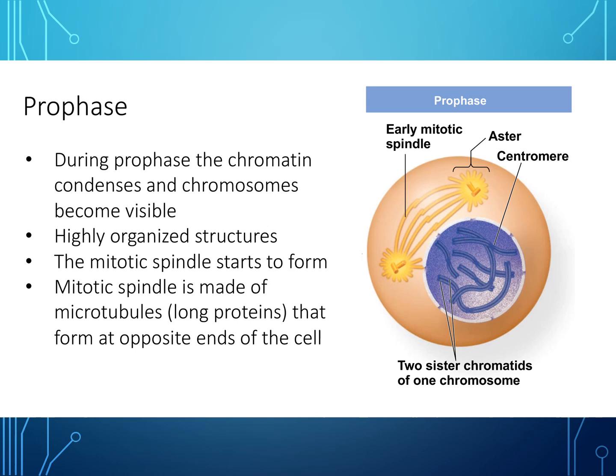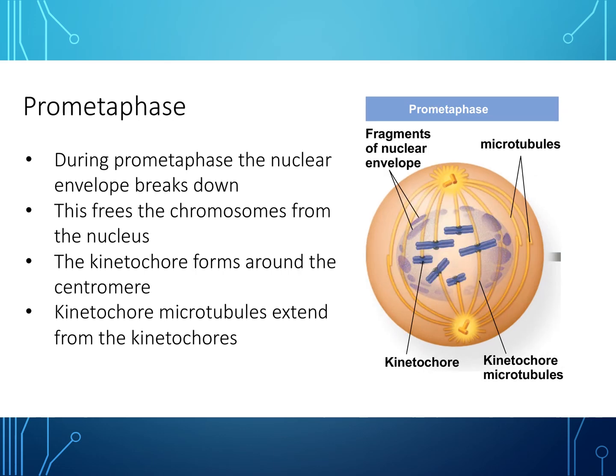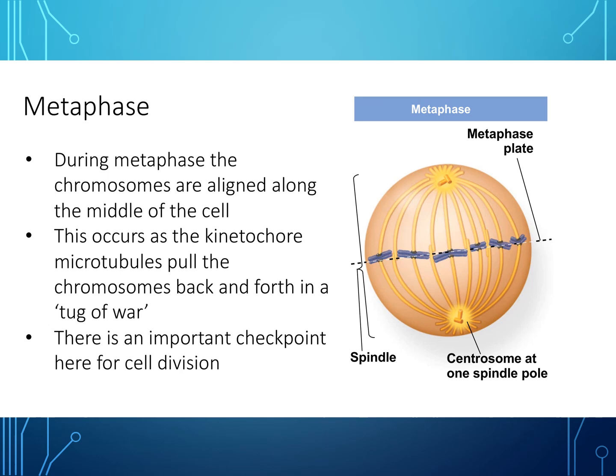During prophase, the chromatin condenses and chromosomes become visible as highly organized structures, and the mitotic spindle starts to form from long proteins called microtubules at opposite ends of the cell. During pro-metaphase, the nuclear envelope breaks down, freeing the chromosomes from the nucleus. The kinetochore forms around the centromere and kinetochore microtubules extend from the kinetochores. During metaphase, the chromosomes are aligned along the middle of the cell as kinetochore microtubules pull the chromosomes back and forth in a tug of war. This metaphase-to-anaphase transition is an important checkpoint for cell division.